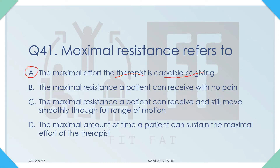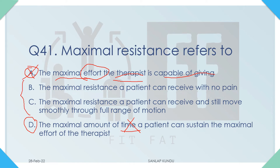Let's check the options one by one. Option A says the maximal effort the therapist is capable of giving — but resistance is given by the therapist while effort is given by the patient. So the maximal effort will be given by the patient, not the therapist — Option A is wrong. Option D mentions the maximal amount of time, which is completely wrong as there is no timing concept in this context.